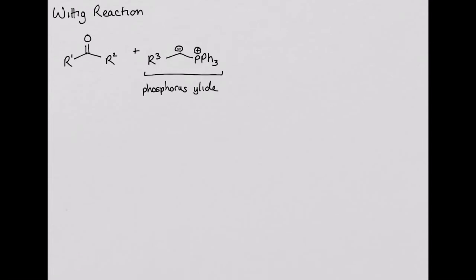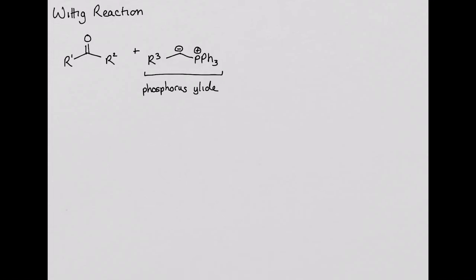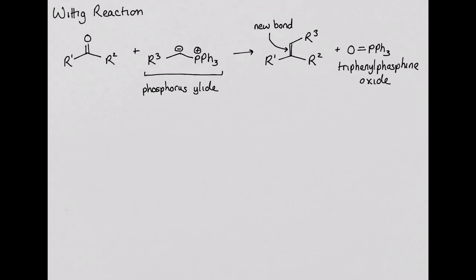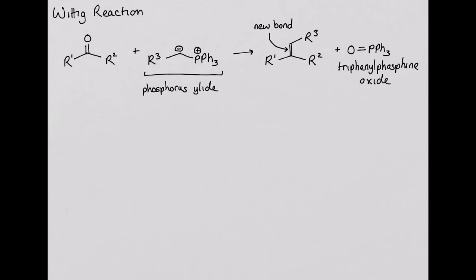Combining the carbonyl compound with the phosphorus ilid creates a new compound containing an alkene. The other product is triphenylphosphine oxide. This reaction is an oxidation-reduction reaction where the carbonyl compound is reduced and the phosphorus is oxidized.